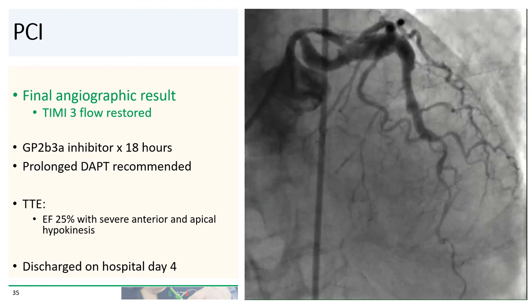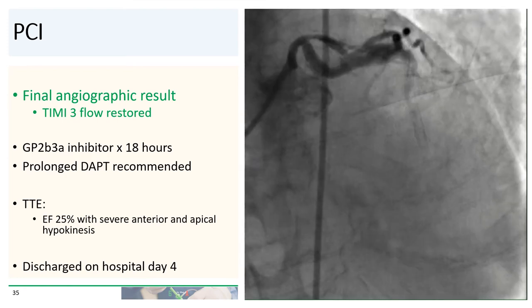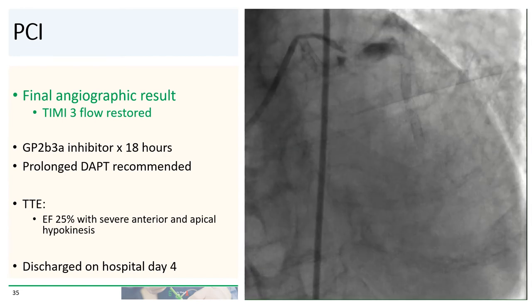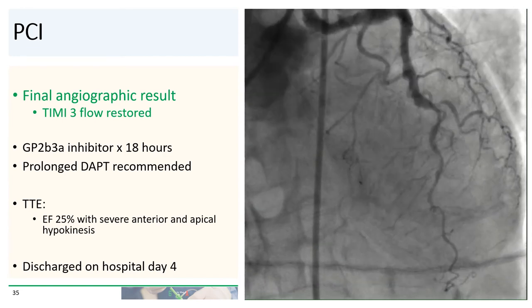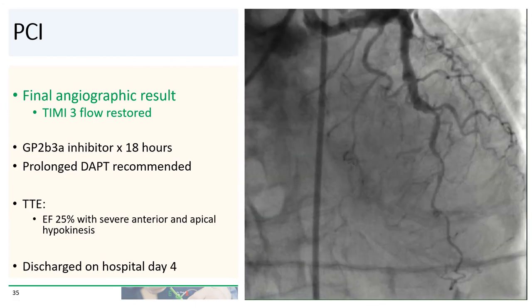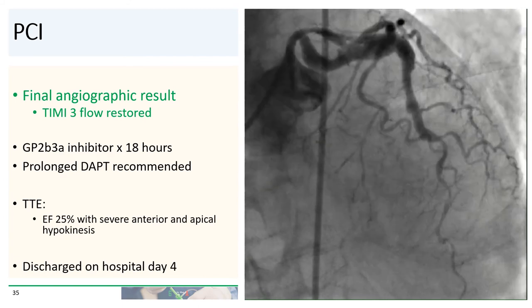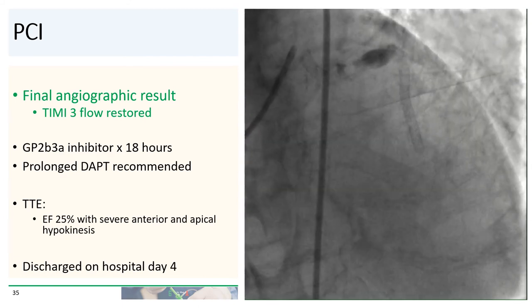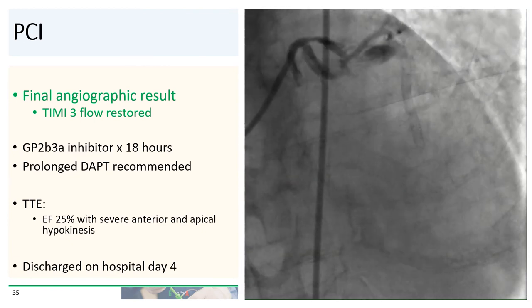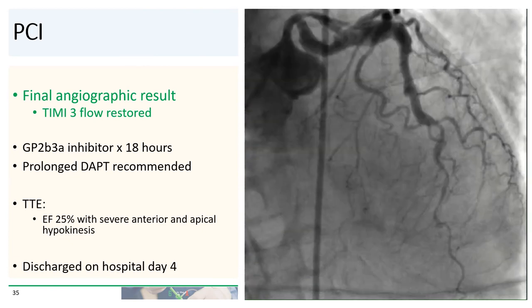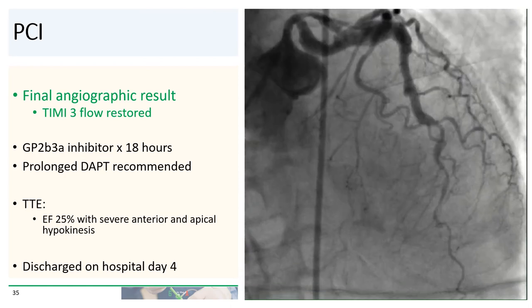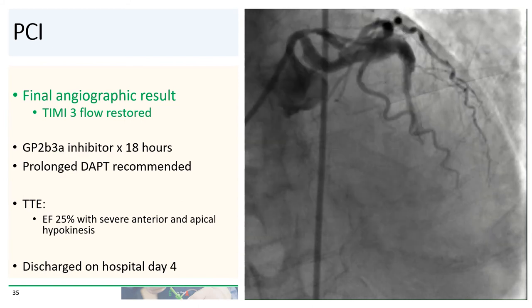Here is the final angiographic result. We do have TIMI flow, and the angiographic appearance is reasonably satisfactory considering how the patient presented. The patient was placed on an infusion of a GP2B3A inhibitor for 18 hours, and we recommended prolonged dual antiplatelet therapy. The next day, echocardiogram showed ejection fraction of 25% with severe anterior apical hypokinesis. The remainder of the hospital course was relatively uneventful, and the patient was discharged home on hospital day four.